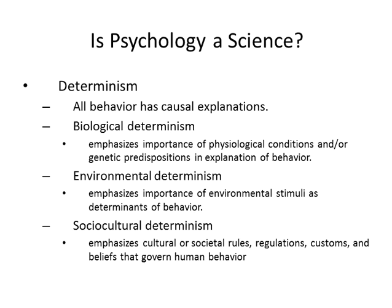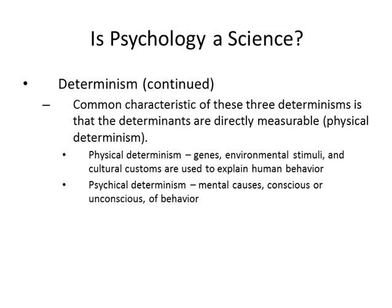Can things be determined? All behavior has causal explanations — someone does something, there's a reason behind it. Biological determinism emphasizes the importance of physiological conditions and/or genetic predispositions in explanation of behavior. Environmental determinism emphasizes the importance of environmental stimuli as determinants of behavior. Sociocultural determinism emphasizes cultural or societal rules, regulations, customs, and beliefs that govern human behavior. The common characteristic of these three is that the determinants are directly measurable — physical determinism. Genes, environmental stimuli, and cultural customs are used to explain human behavior and have some objectivity to them.